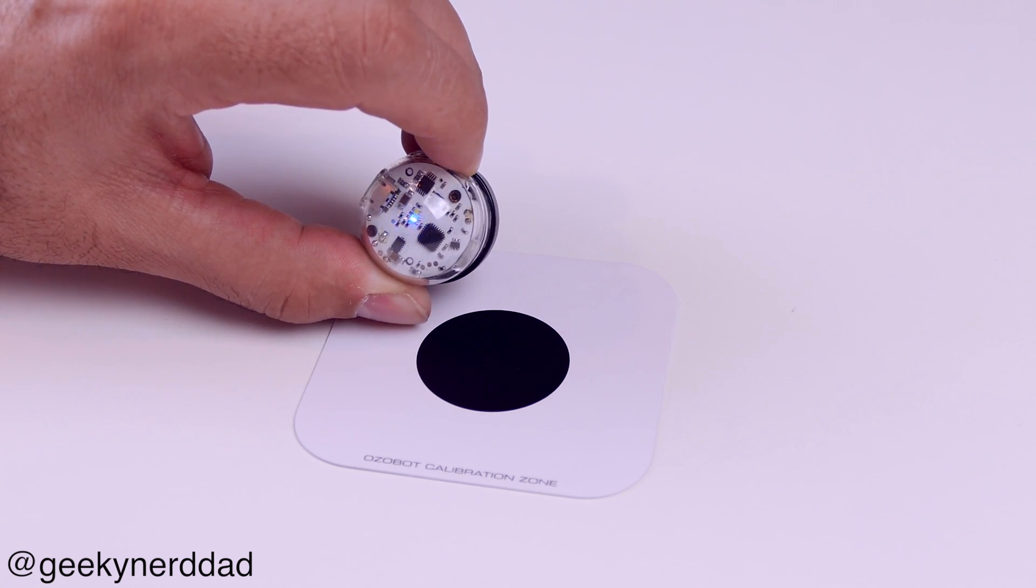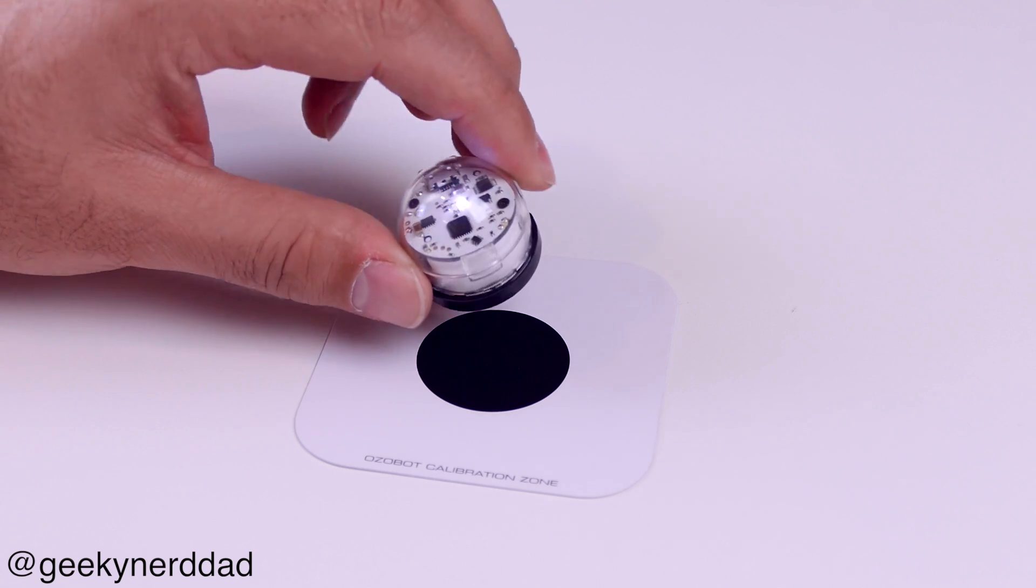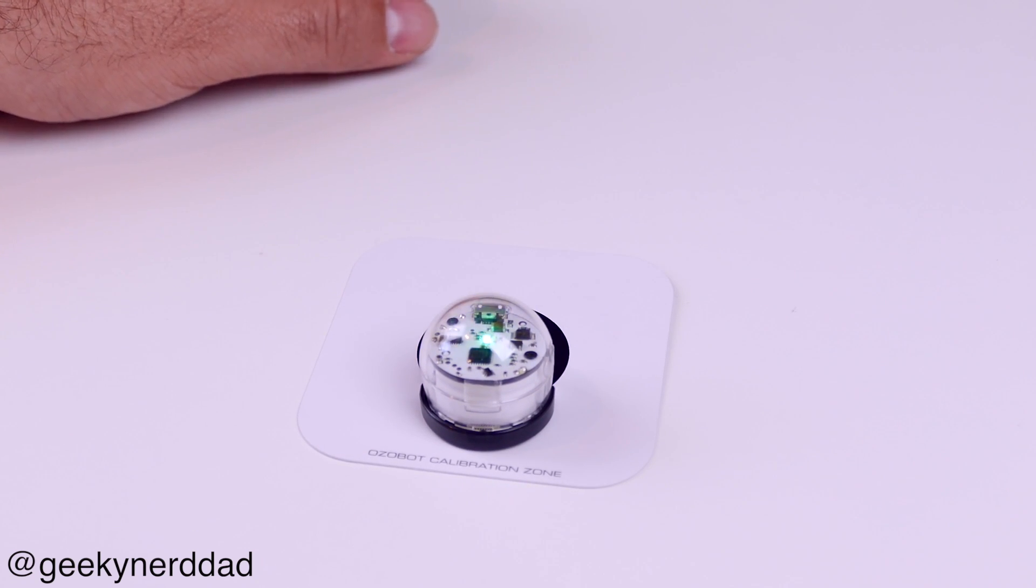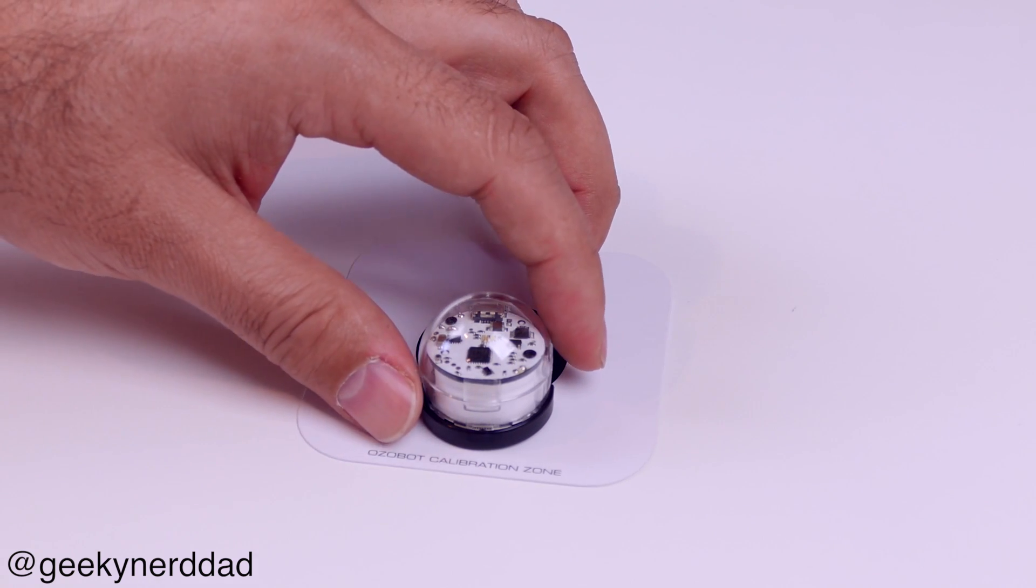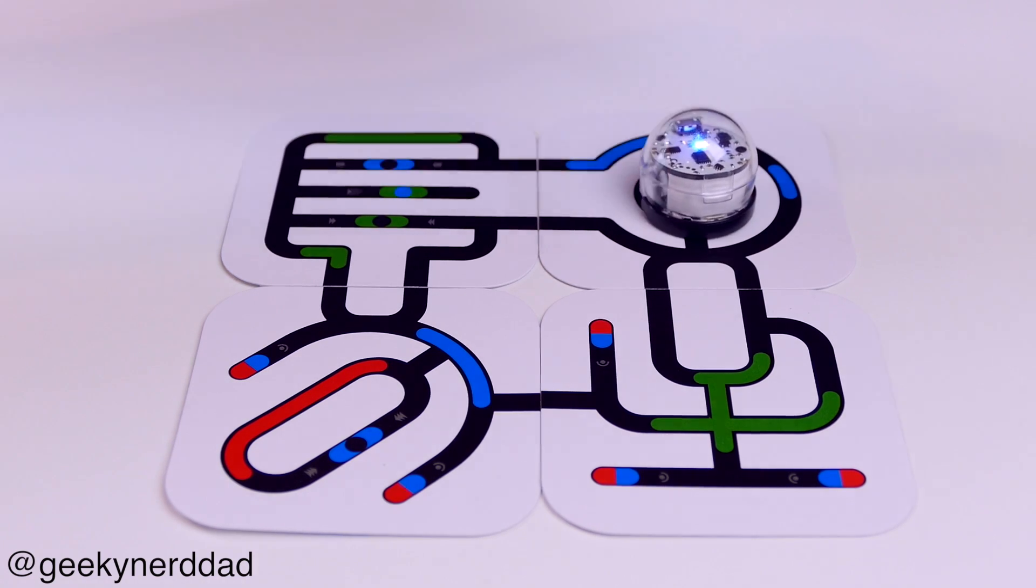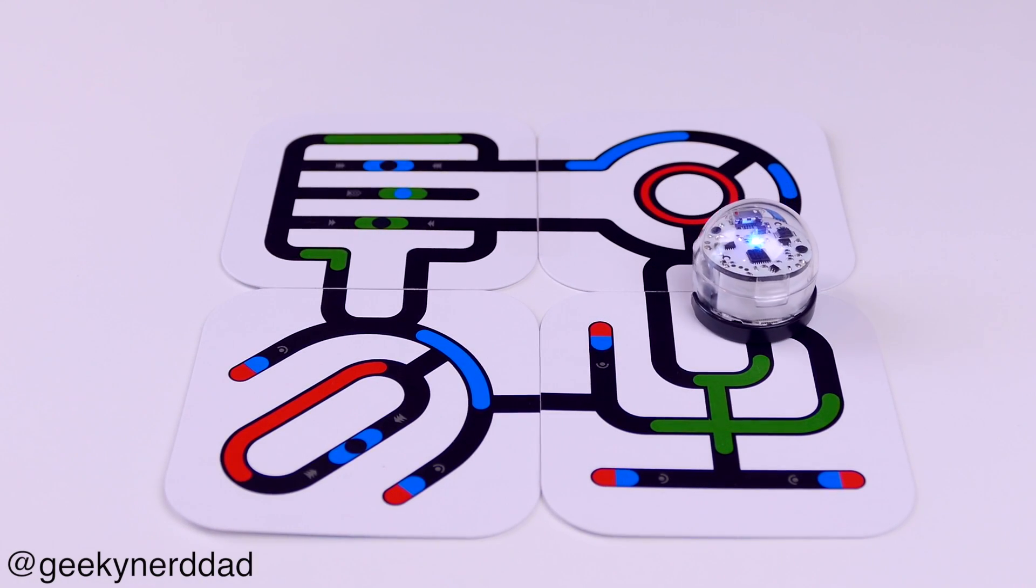Here we go, let's calibrate it. To start off, you need to calibrate this before you use it on paper or a tablet or pretty much anything. You hold the button until the white light, the LED, flashes white and then when it flashes green, boom, you're calibrated.